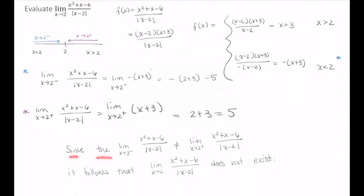Since the limit as x approaches 2 from the left of x squared plus x minus 6 divided by the absolute value of x minus 2 does not equal the limit as x approaches 2 from the right of x squared plus x minus 6 divided by the absolute value of x minus 2, it follows that this entire limit as x approaches 2 of this function does not exist. I hope this video was helpful.